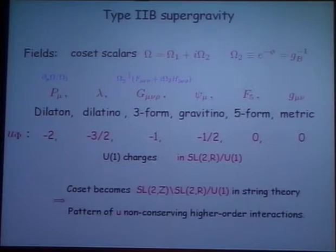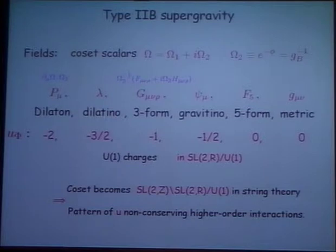And then most importantly, in string theory and in fact in quantum supergravity, we know that that continuous SL(2,R) has to be modded out by the SL(2,Z). We have to identify the scalar fields under SL(2,Z). That follows — well, in string theory it's explicit. The theory is only invariant under this discrete symmetry. In quantum supergravity, we know it because there's an anomaly in that U(1) current which is consistent with this particular coset.